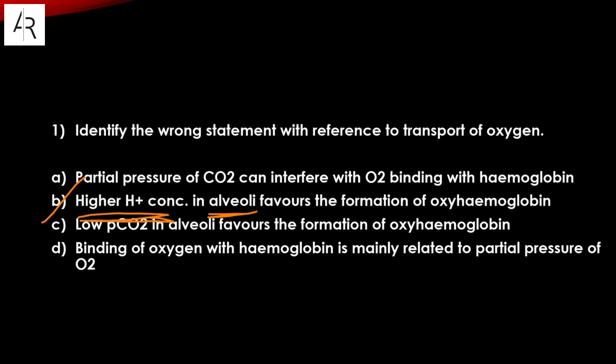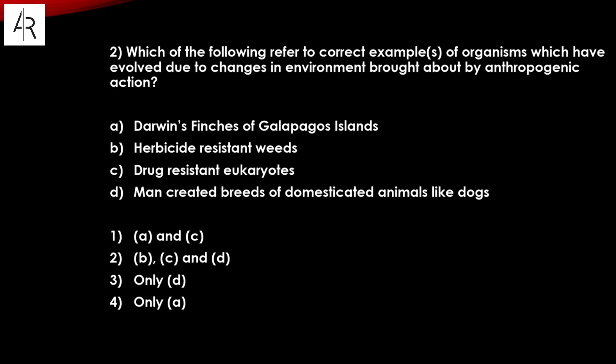Higher H+ concentration should not be here because we are talking about alveoli. Question number two: which of the following refers to a correct example of an organism that has evolved due to changes in environment brought about by anthropogenic action — that means resulting from human activity.